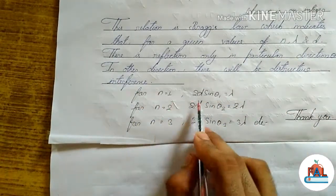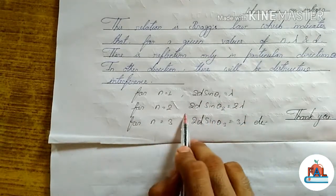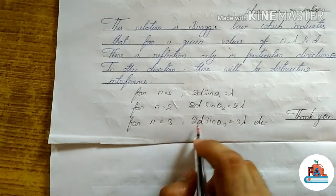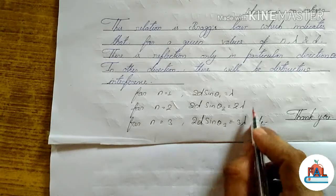That is, for n=1, 2D sin theta₁ equals lambda. For n=2, 2D sin theta₂ equals 2 lambda. For n=3, 2D sin theta₃ equals 3 lambda.